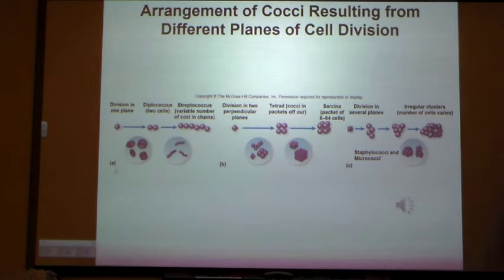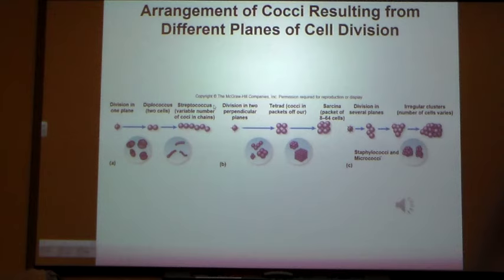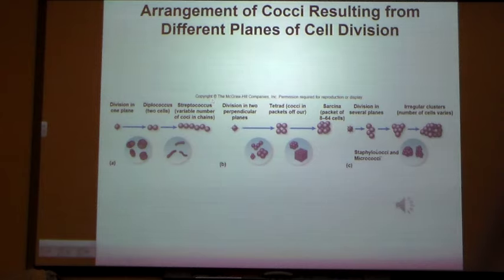Going back to the basic cocci shapes: streptococcus versus staphylococcus. Streptococcus means a chain of coccus bacteria. When four are packed together, they're called tetrads. A bunch of irregular clusters is staphylo — the term staphylo means irregular clusters. Staphylococci and streptococci are the two most important classes of gram-positive bacteria we'll study. For example, strep throat is caused by Streptococcus pyogenes, and MRSA is caused by Staphylococcus aureus.